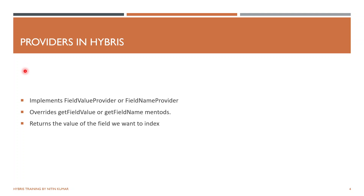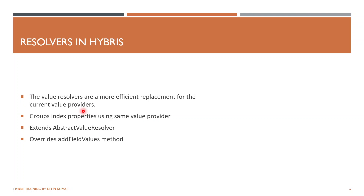A provider is a Java class that implements one of two interfaces: FieldValueProvider or FieldNameProvider. We override the corresponding methods — getFieldValue and getFieldName — and these methods return the field values we want to index to Solr.